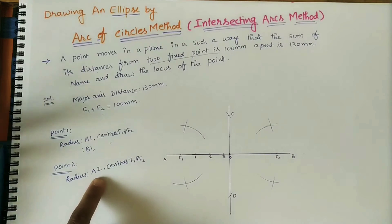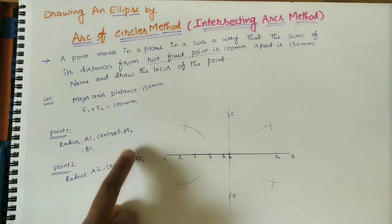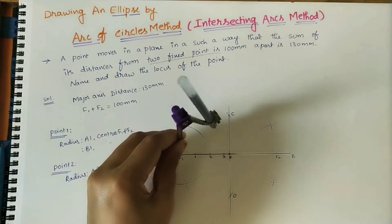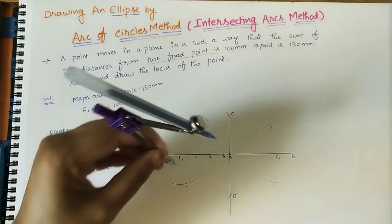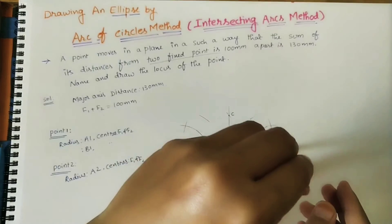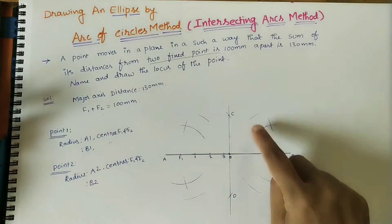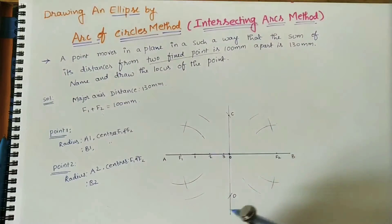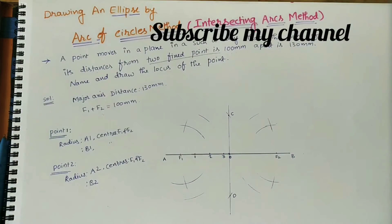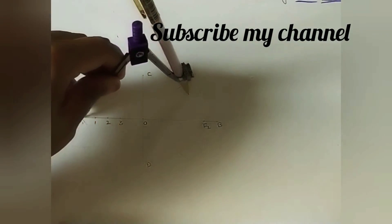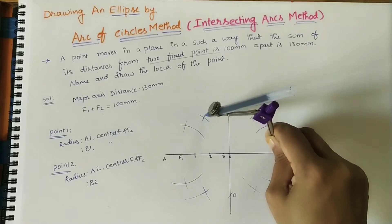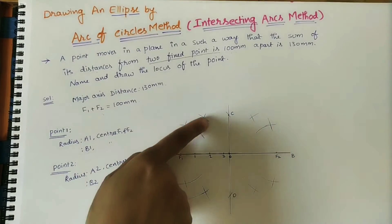Take the next point, point 2. Radius is A2, and centers are the same — F1 and F2 for all points. With A2 radius and F1 as center, draw an arc on both sides. With the same A2 radius and F2 as center, draw arcs on both sides. Then take radius B2 with centers F1 and F2, and cut the previous arcs to get 4 intersection points from point 2.